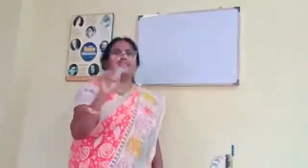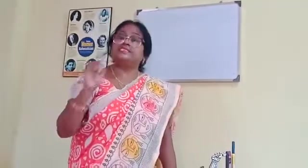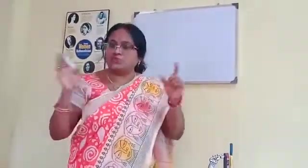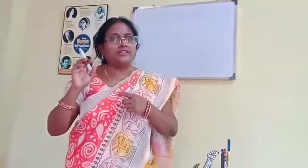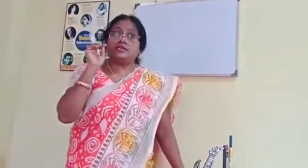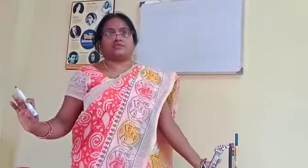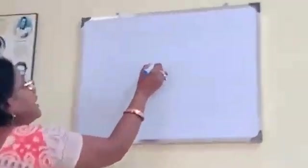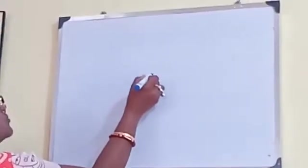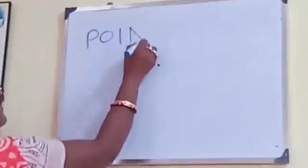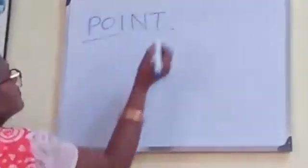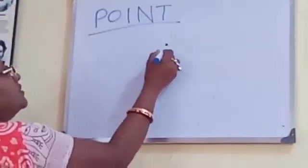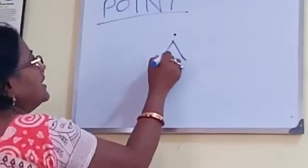A point is an exact location in space. It has no length, no breadth, and no height. It cannot be measured. We represent a point by a dot and name it with a capital letter A.